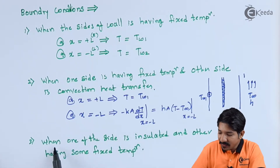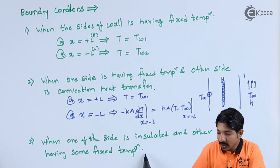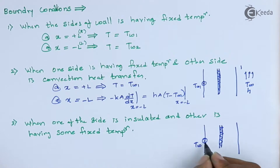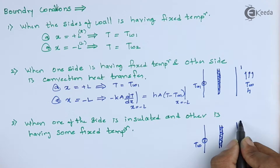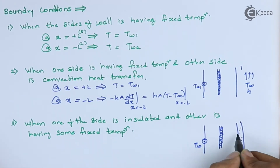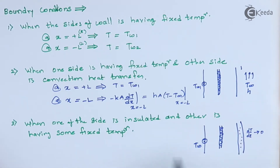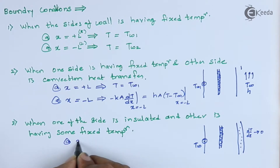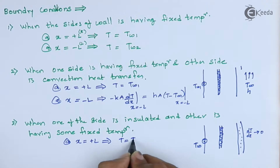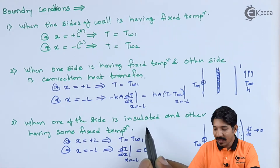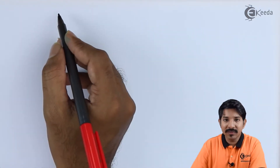The third case is when one side is insulated and the other has a fixed temperature. There is some temperature T_w1 towards one side and insulation on the other side. Insulation means no heat transfer, so dT/dx equals zero. The boundary conditions are: T equals T_w1 at one end, and dT/dx equals zero at x equals minus l — an important boundary condition with wide practical application.